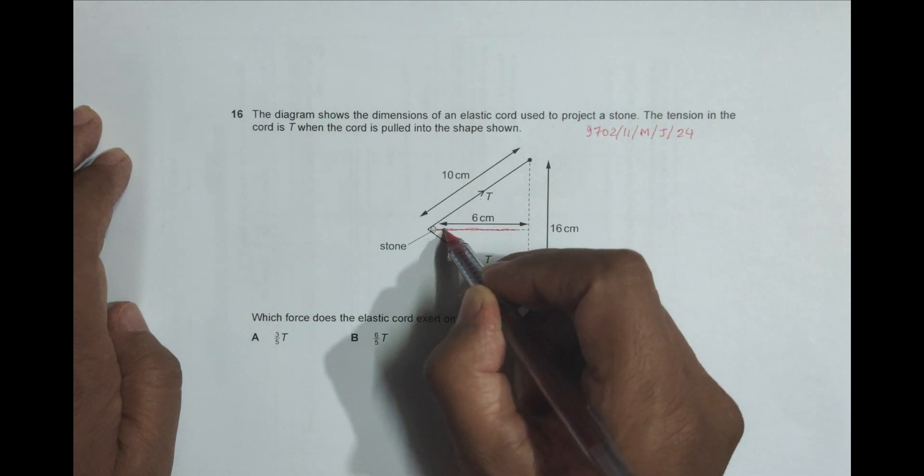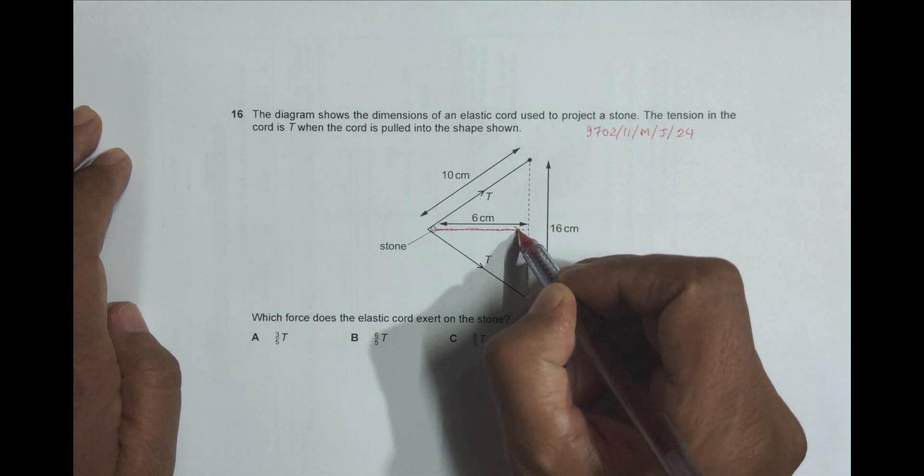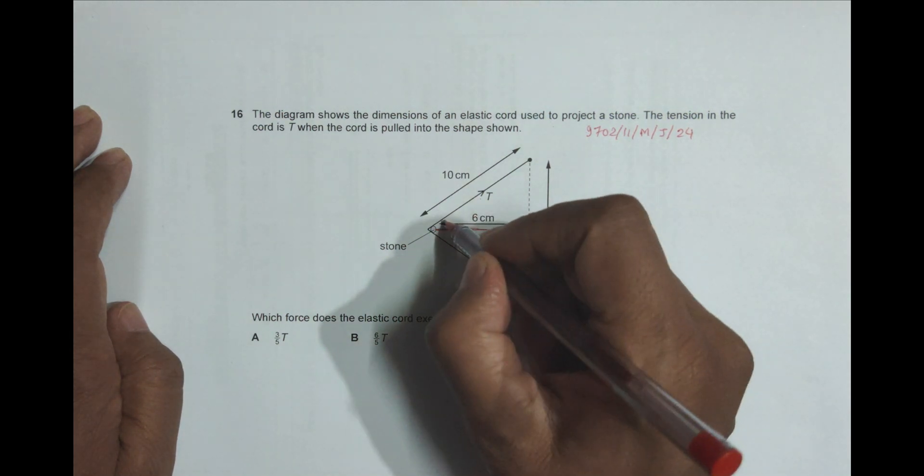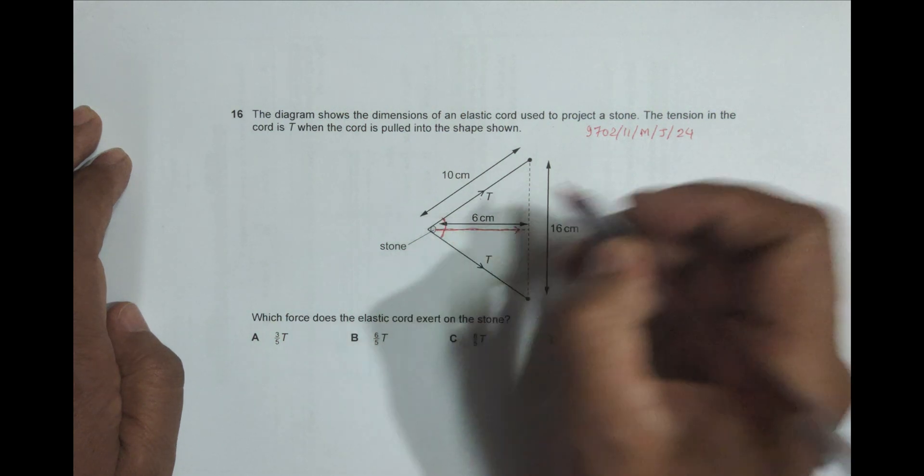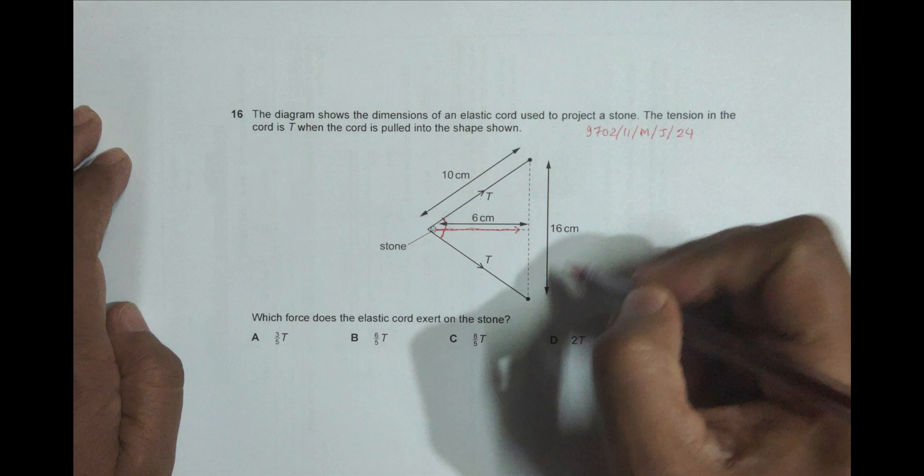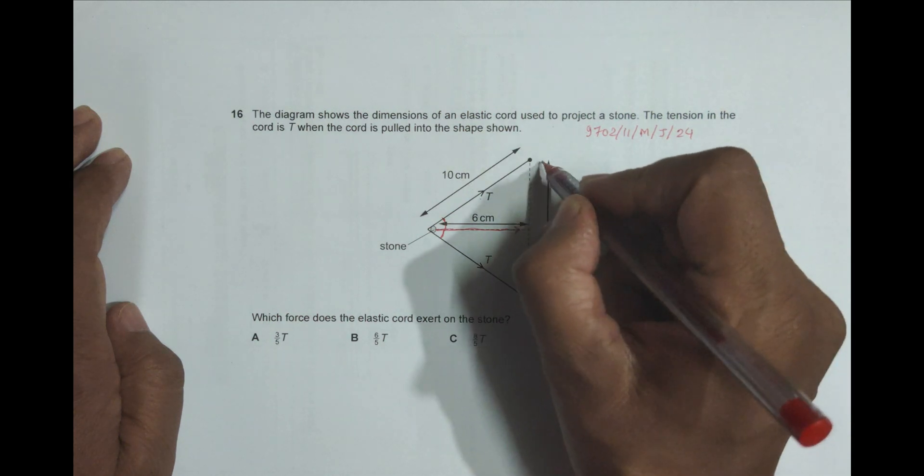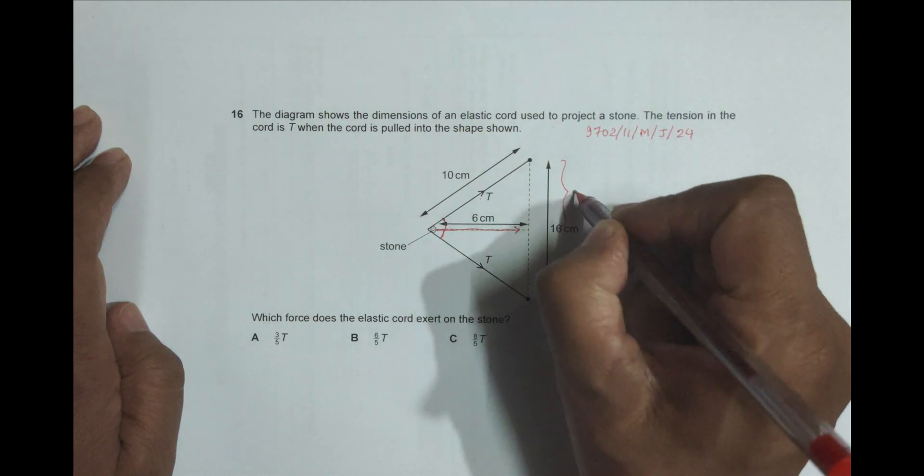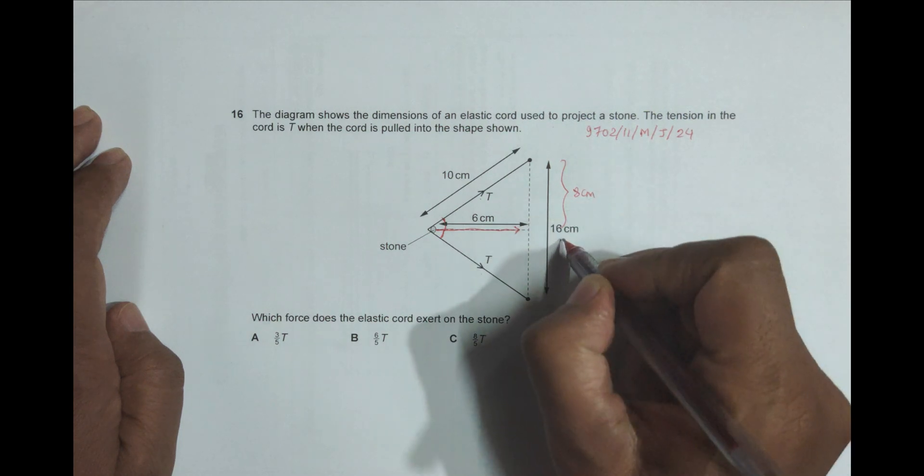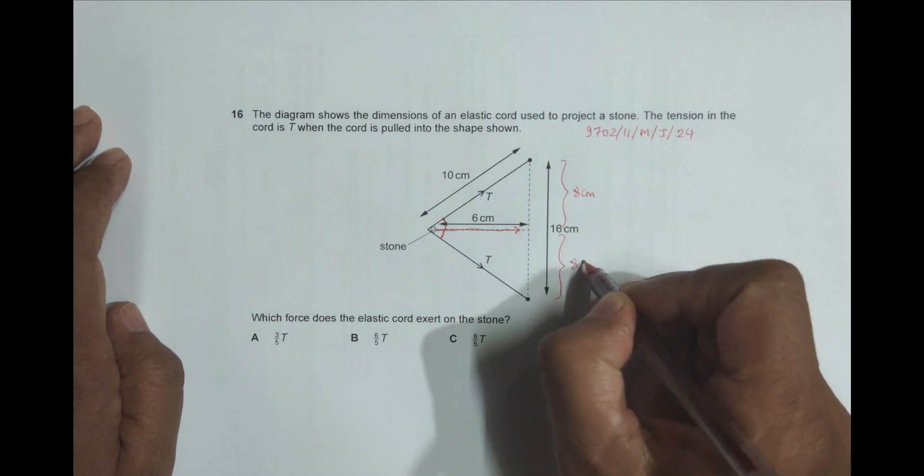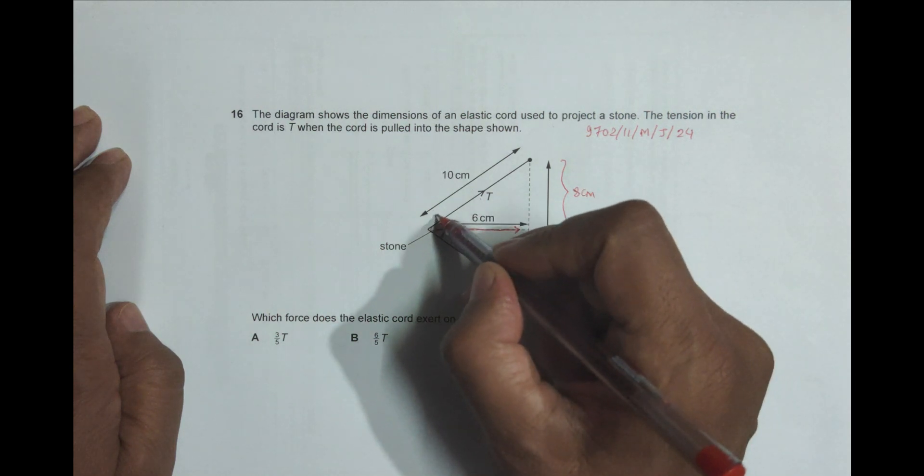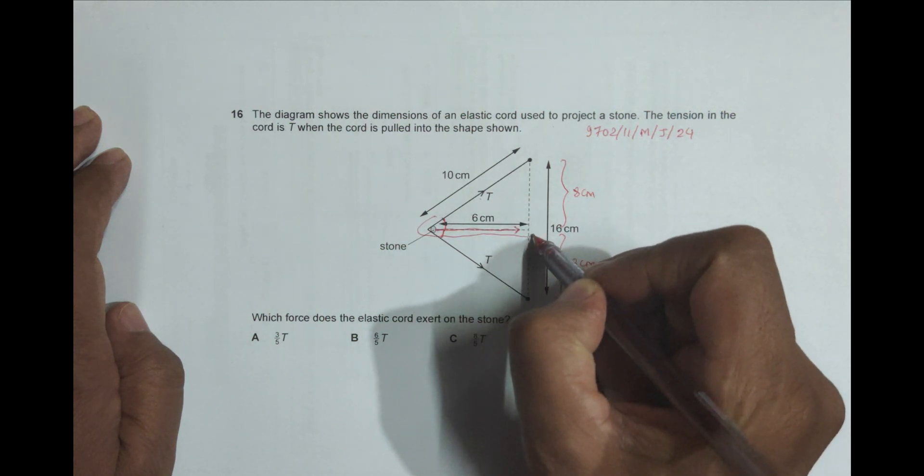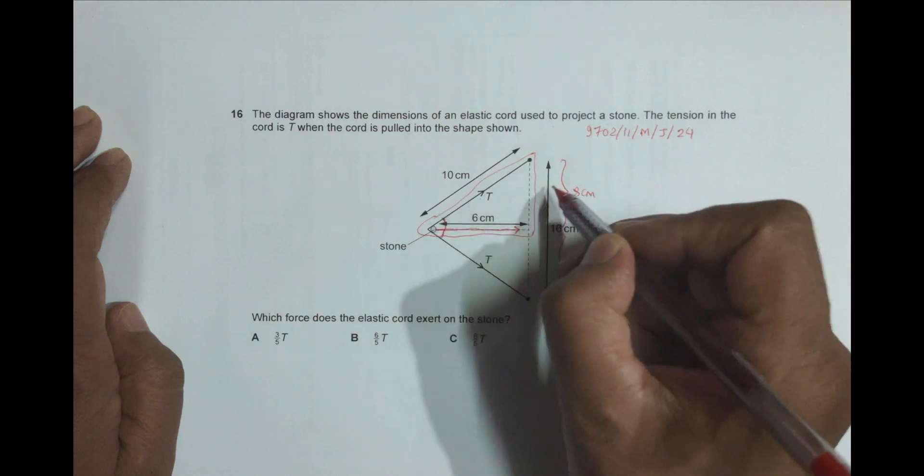Now that requires an angle, so first let us find this angle. For that, let me do this as half. This is 16 centimeters, so half will be 8 centimeters, and this half also will be equal to 8 centimeters. Now we have this triangle: 8, 10, 6.